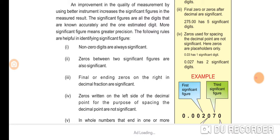(1) Non-zero digits are always significant. (2) Zeros between two significant figures are also significant. (3) Final or ending zeros on the right in a decimal fraction are significant. (4) Zeros written on the left side of the decimal point, or for the purpose of spacing the decimal point, are not significant.